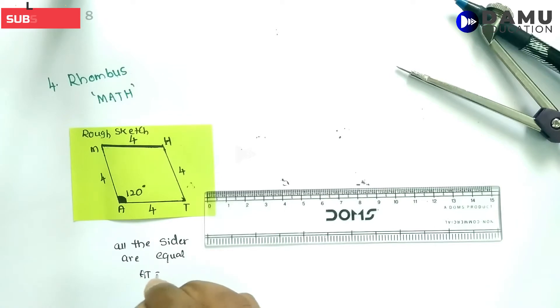That means AT equals TH equals HM equals MA, all equal to 4 cm.